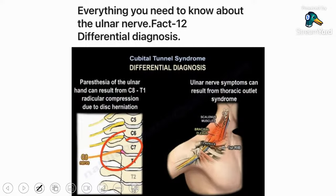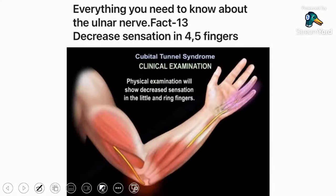Fact number twelve: check the differential diagnosis. You may think it's cubital tunnel, but it may be a double crush, disc herniation with radicular compression, or thoracic outlet syndrome. Decreased sensation in the fourth and fifth fingers is an important early sign — especially in young patients or those recovering from anesthesia, asking about feeling in these fingers is a good test for the ulnar nerve.